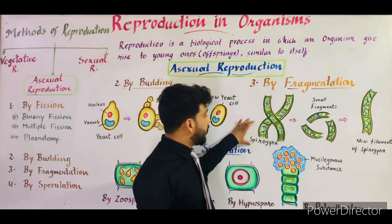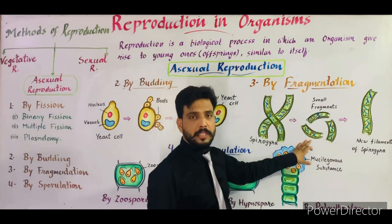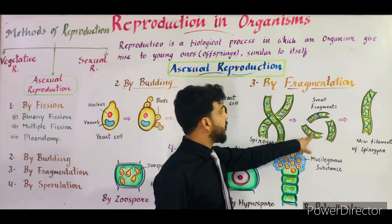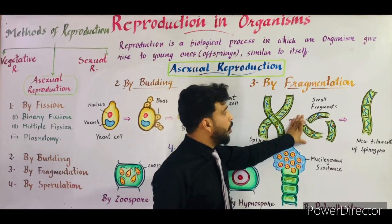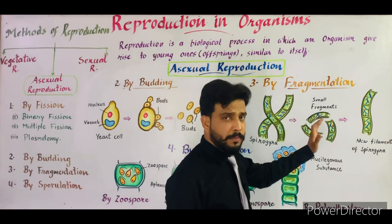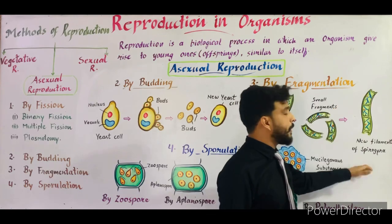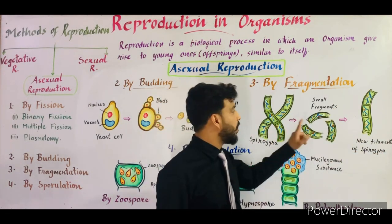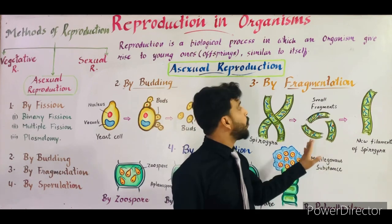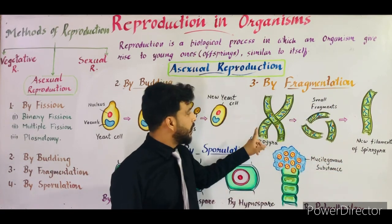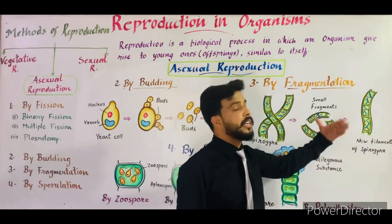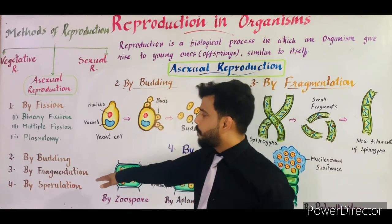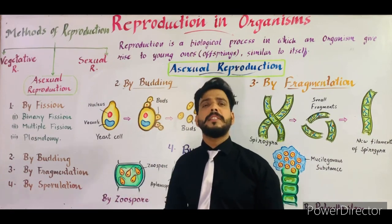The filaments of Spirogyra break into small fragments. As you can see in the diagram, these are the small fragments formed by the filaments. After some time all the fragments that detach from the main body give rise to a new filament of Spirogyra. This phenomenon is known as fragmentation.